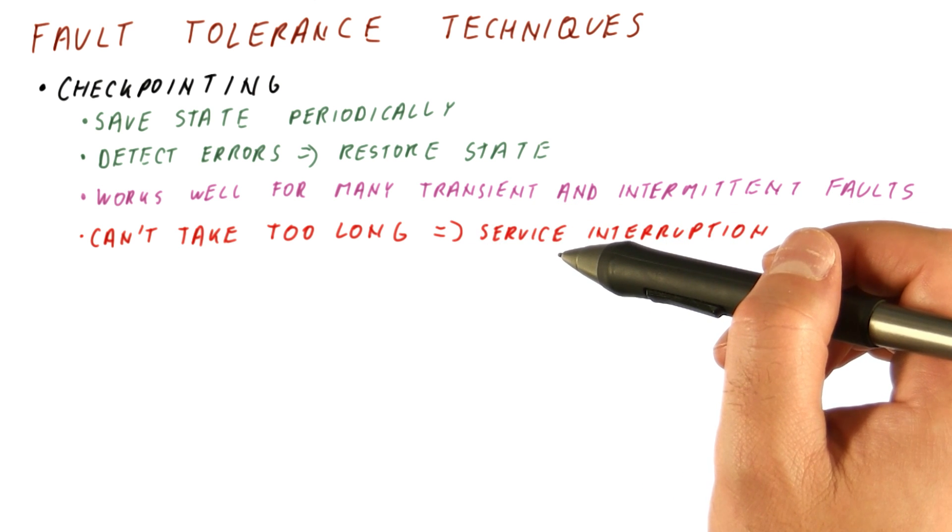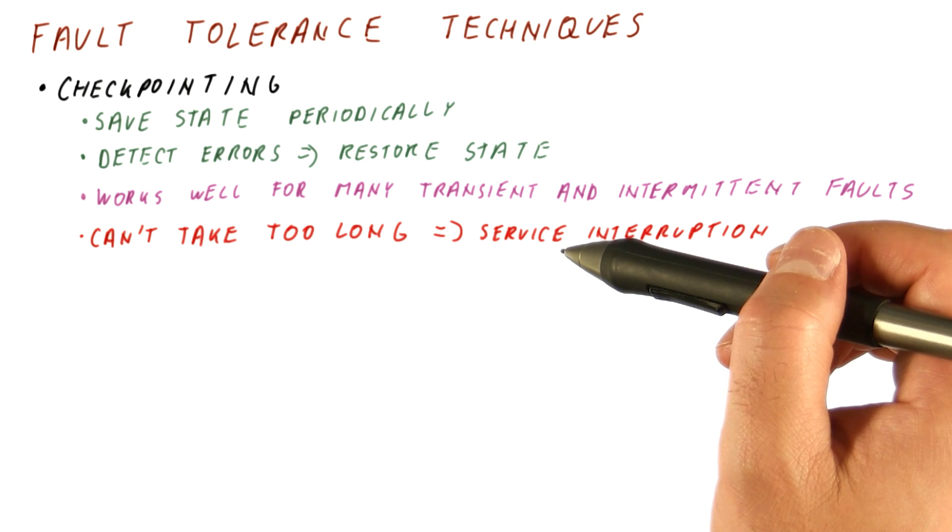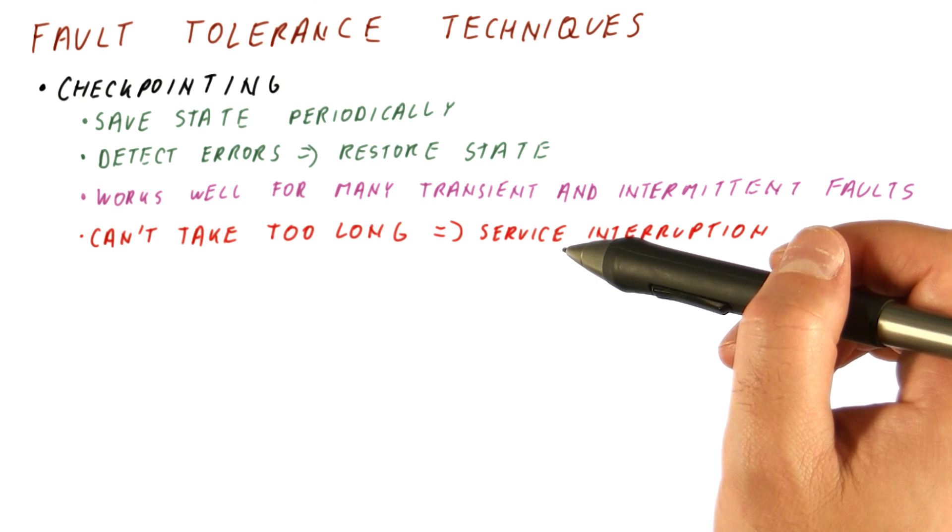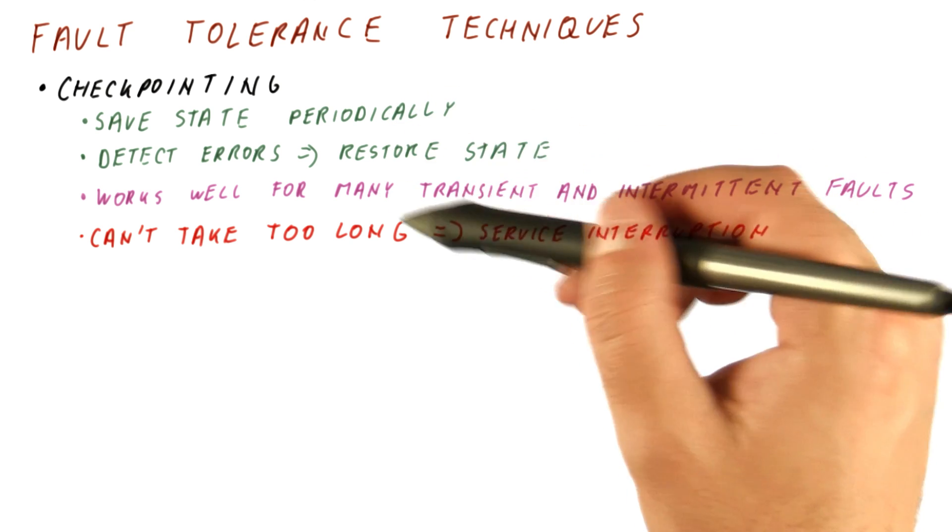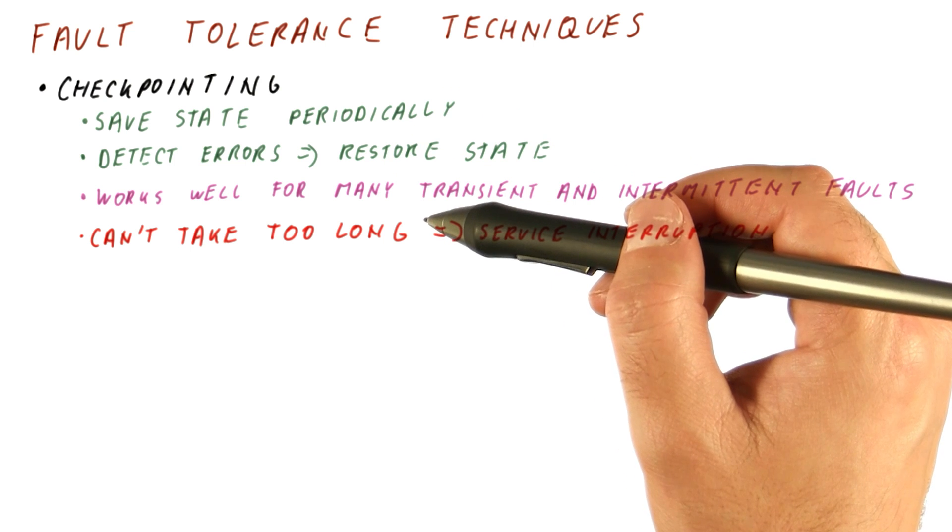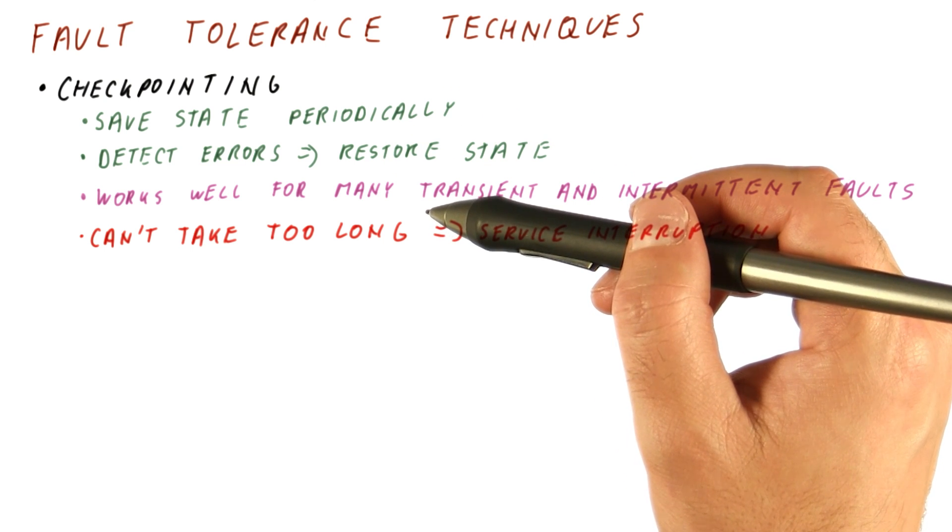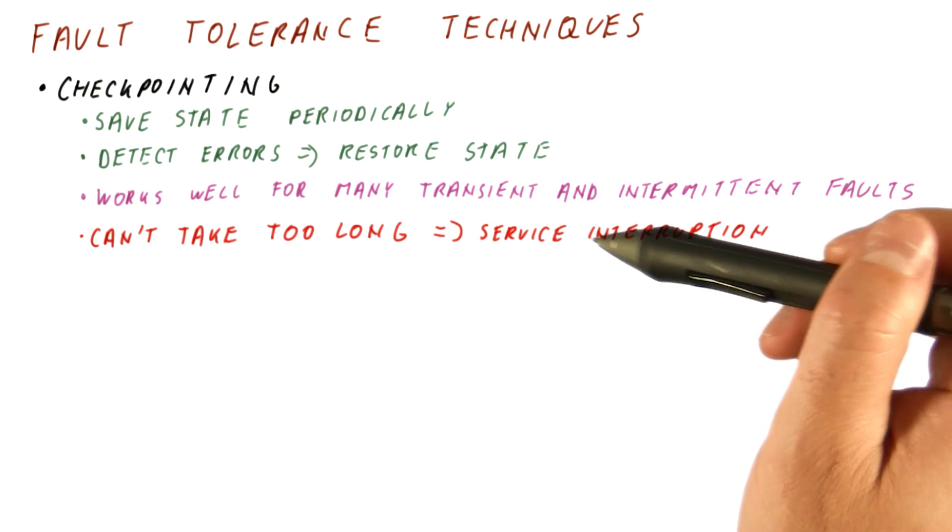For example, if the system is supposed to answer all web queries within one second, if we manage to do all of this in such a way that we still respond to everything within one second, then there has been no service interruption.